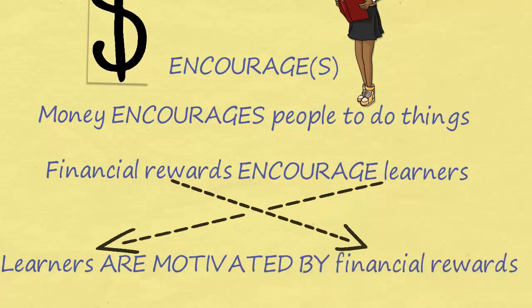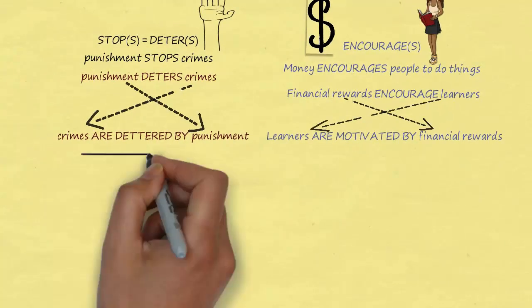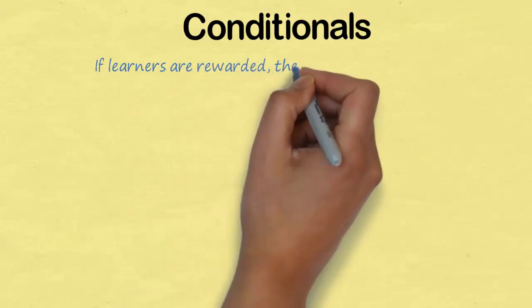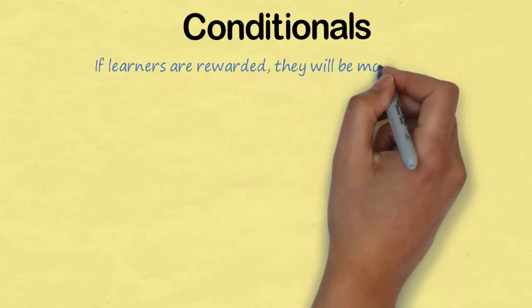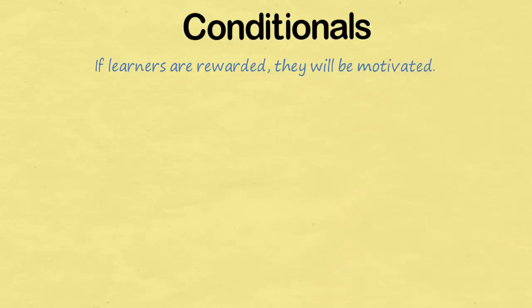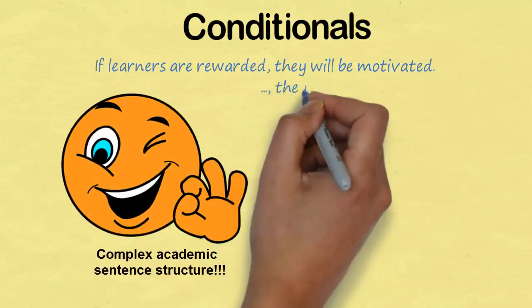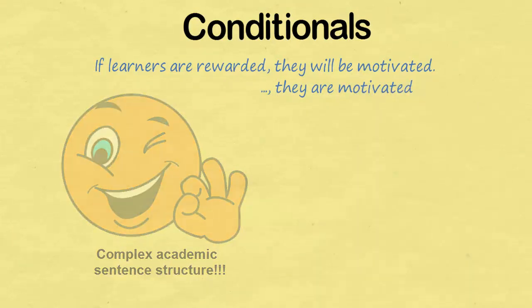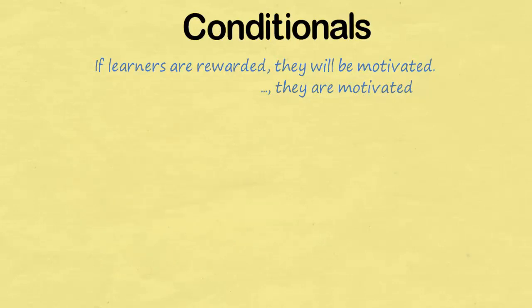Another way we can use causal language is by using conditionals. This is a bit more advanced, but also a good way — and it's good to know two, three, or four different ways to use language. Using the same topic of learners and financial rewards, we could say 'If learners are rewarded financially, they will be motivated.' We could also say 'If learners are rewarded, they are motivated.' This is a high-level grammatical sentence that will help improve your grammar mark in IELTS and also your structure mark.